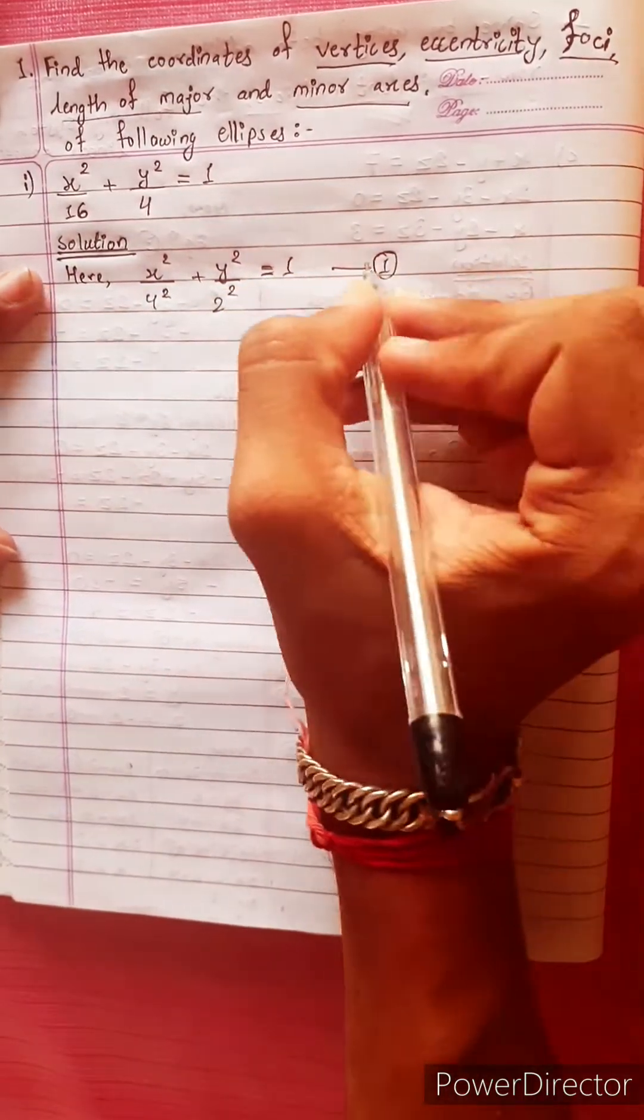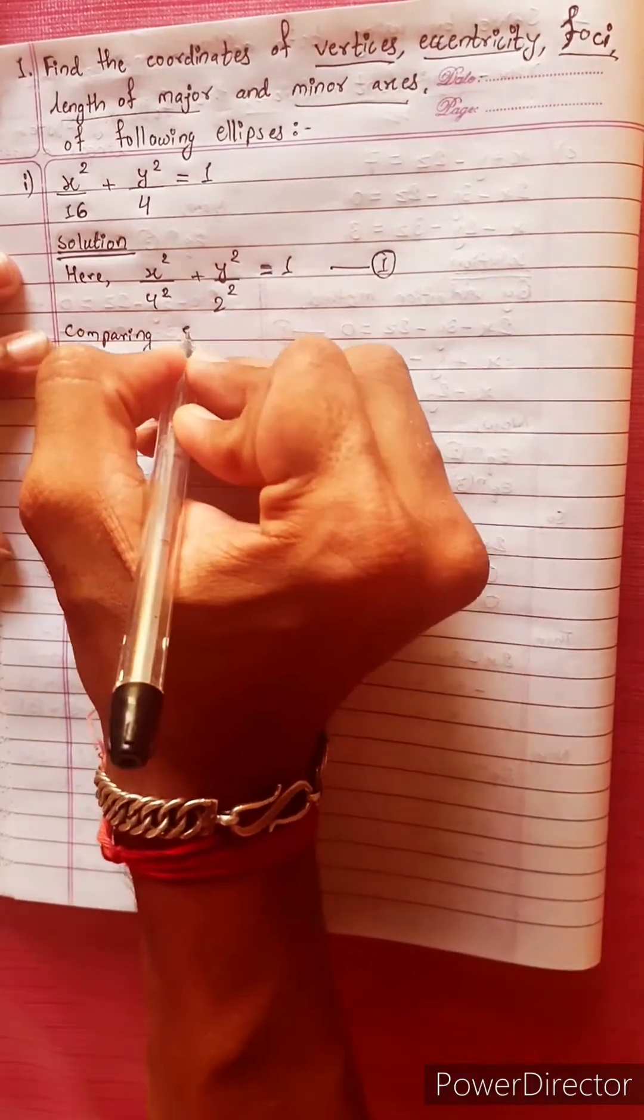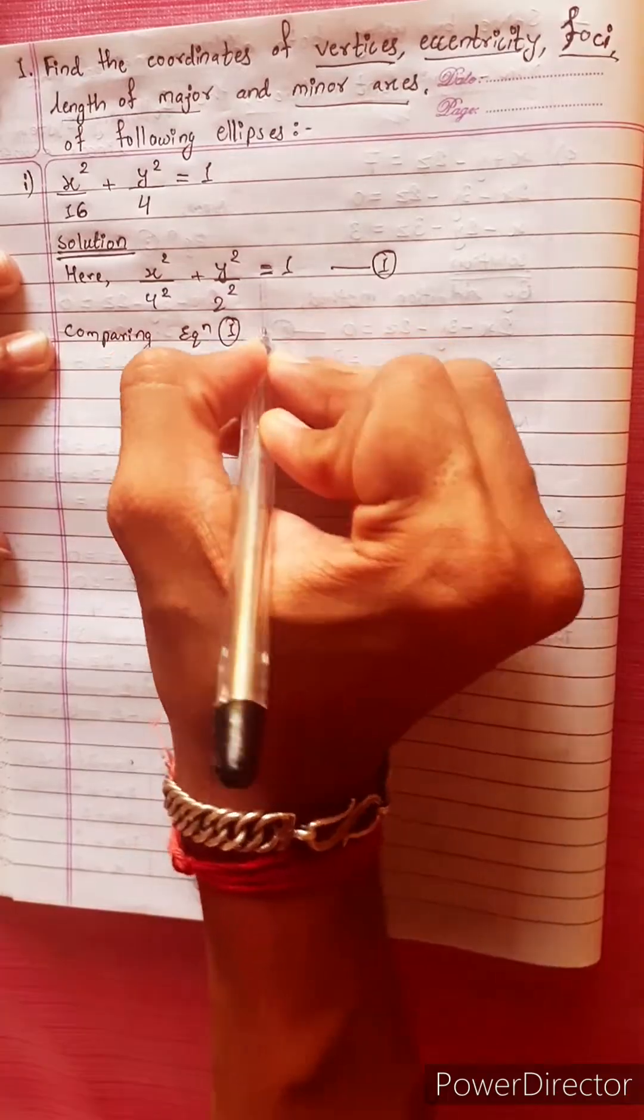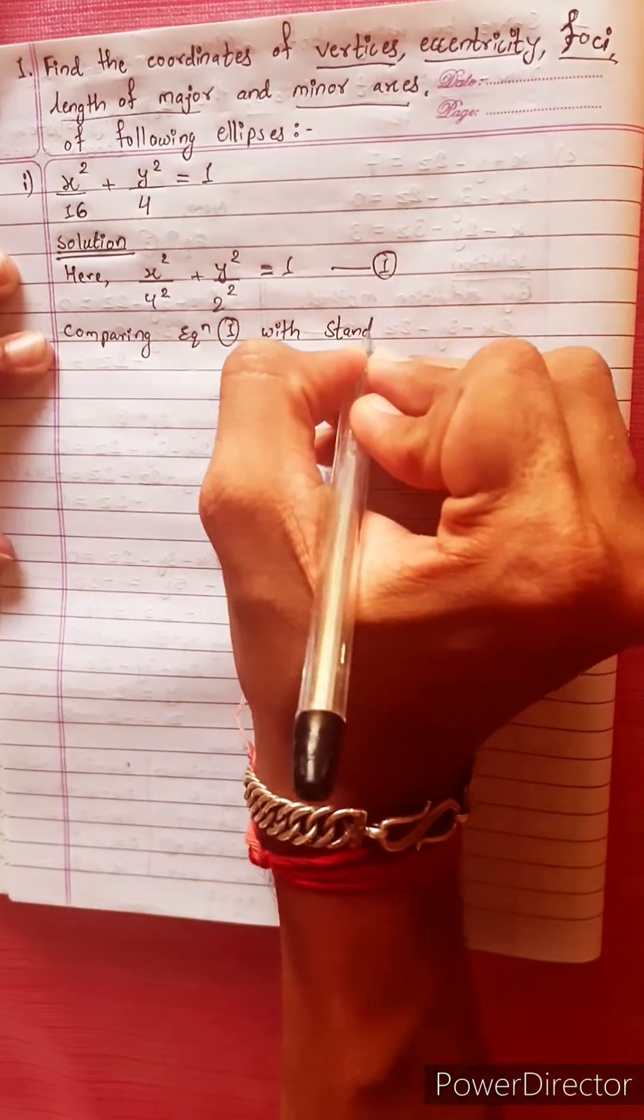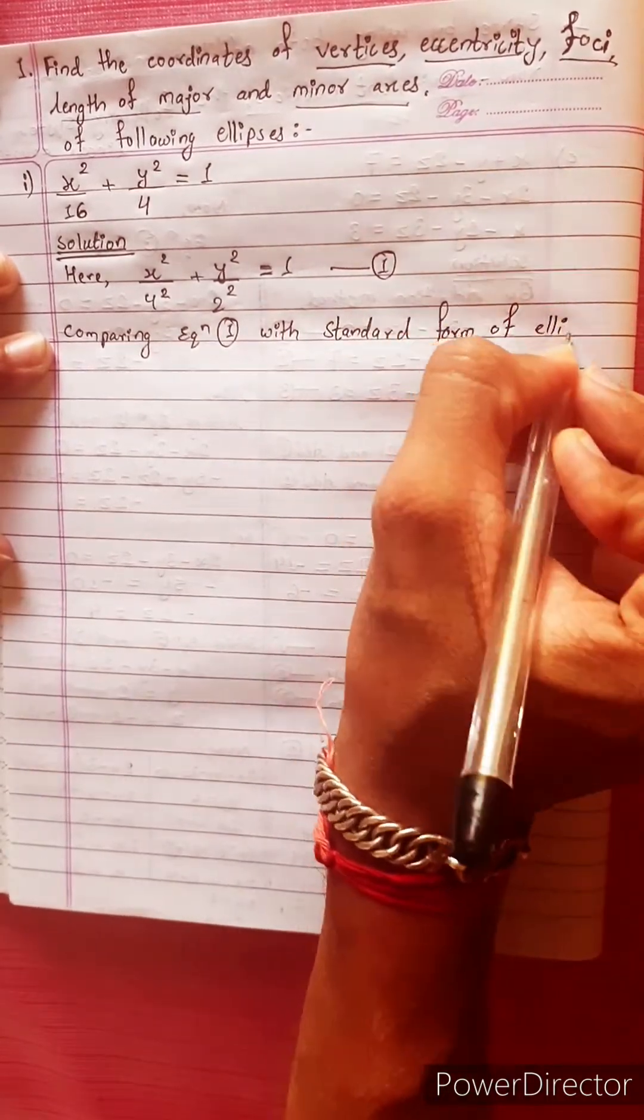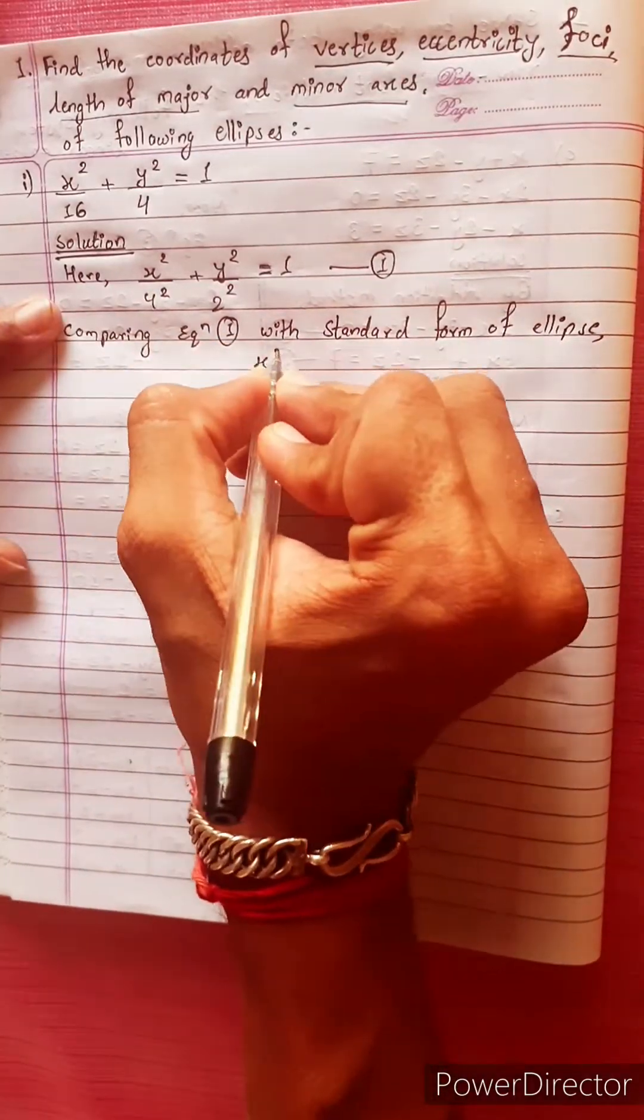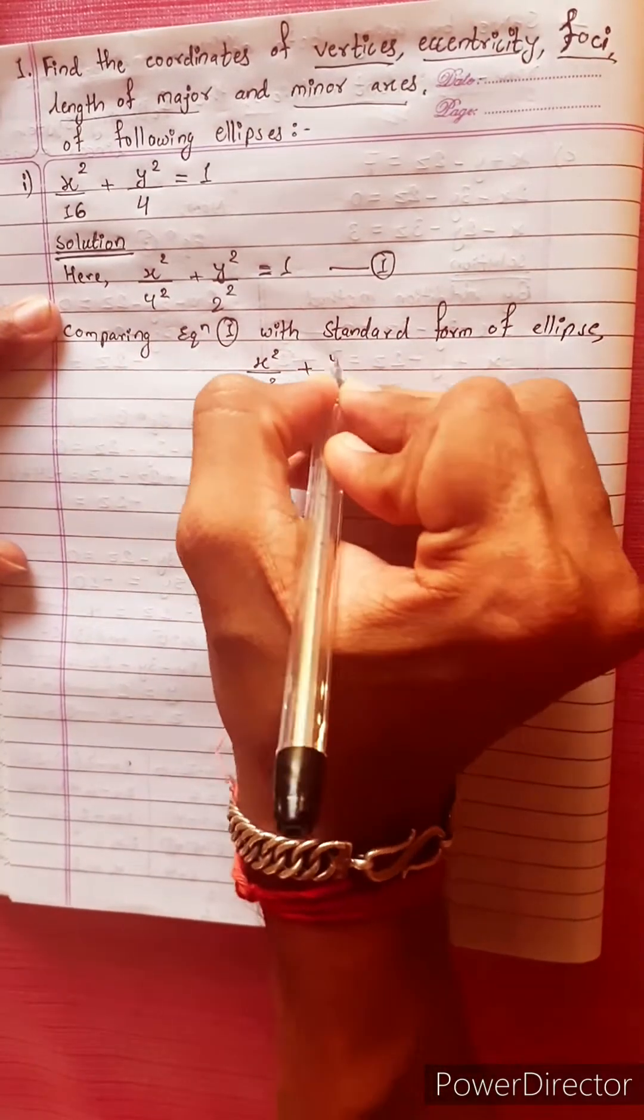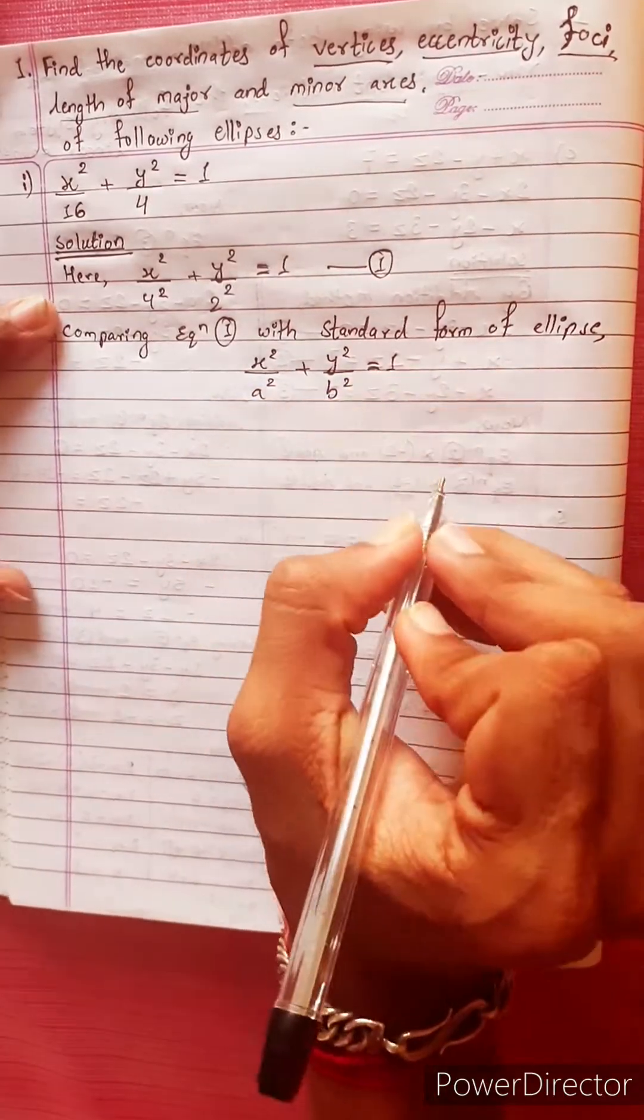Here I am going to show you equation 1. Comparing equation 1 with standard form of ellipse: x squared divided by a squared plus y squared divided by b squared equals to 1. This is the standard form of the ellipse.